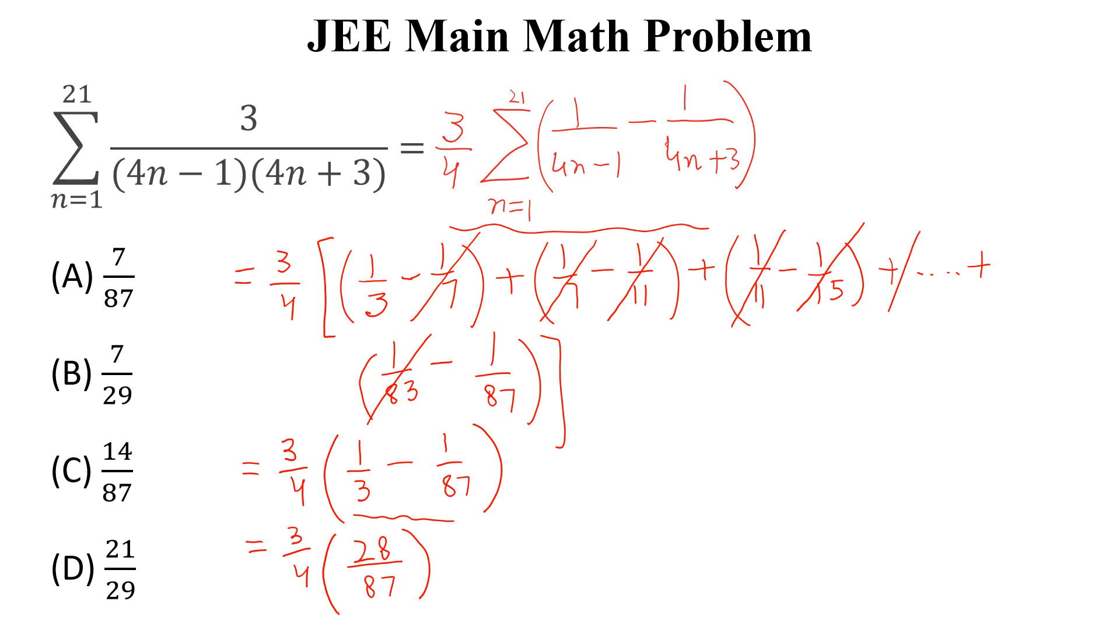And if we simplify it more, 4 into 7 is 28, 3 into 29 is 87. So this is equal to 7 by 29, and this is the right answer.